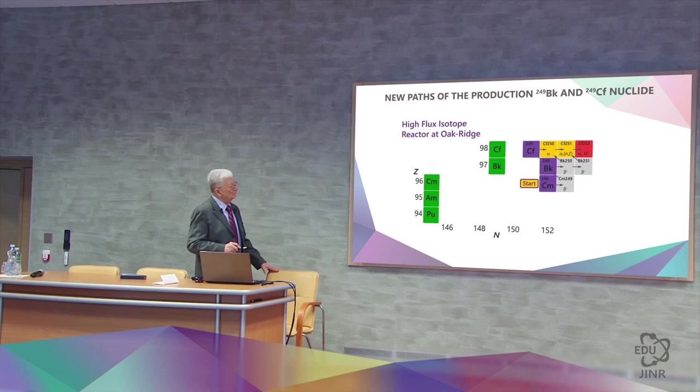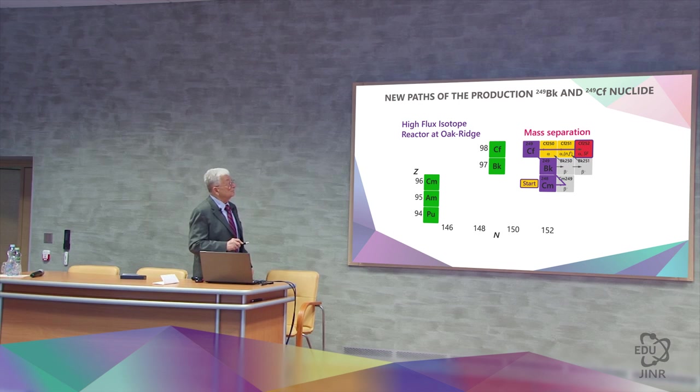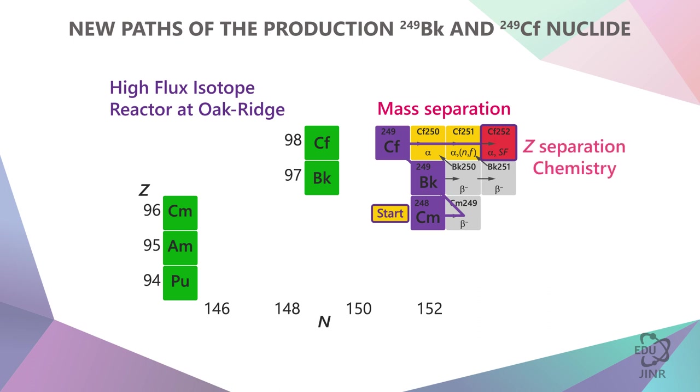That creates the following situation. Curium-48 captures a neutron leading to berkelium, after which californium is obtained. If we want to get enriched isotopes, we have to divide them using a mass separator. If we want to get different elements, then we have to divide them chemically.